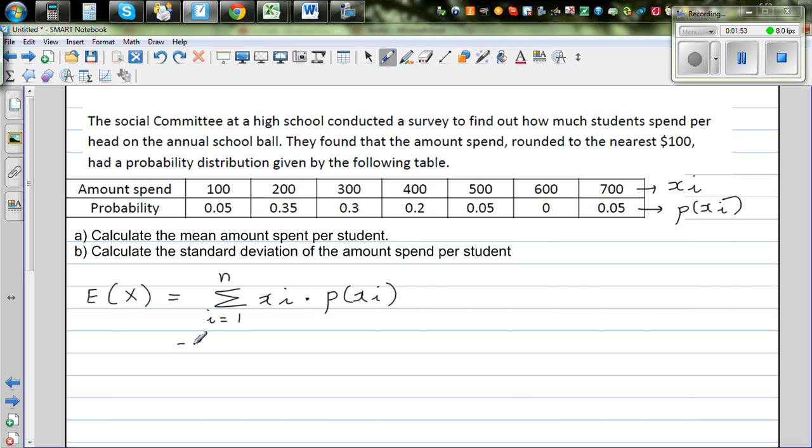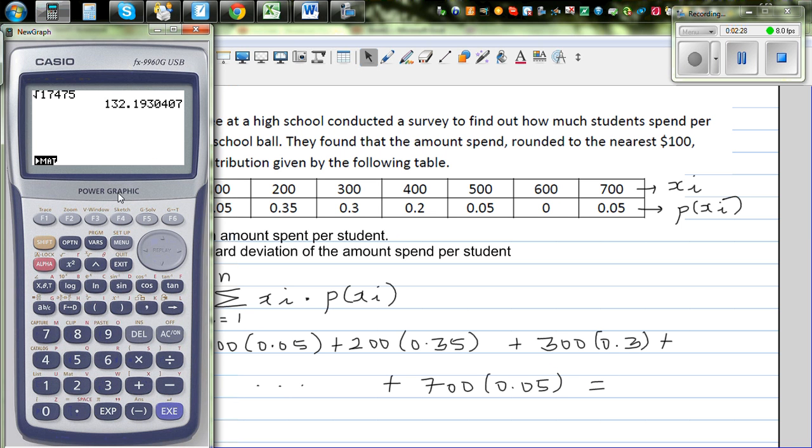So basically what we do is 100 times 0.05, plus 200 times 0.35, plus 300 times 0.3, and so on. If you keep on adding, it is plus 700 times 0.05, which will give you the expected value. So let's use the calculator.